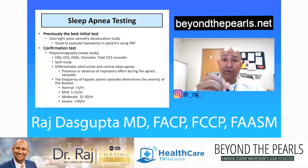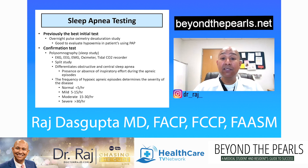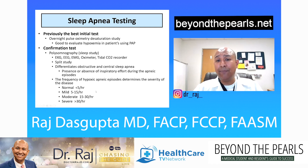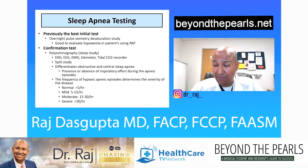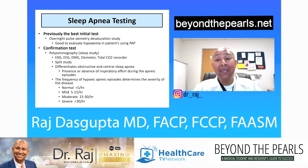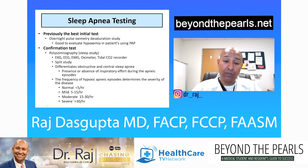In an in-lab study, I often do a split night — the first half to make the diagnosis, the second half to potentially treat with CPAP or BiPAP. Regarding severity, we use the apnea-hypopnea index: 0-5 is normal, 5-15 is mild, 15-30 is moderate, and greater than 30 is severe. I'm very aggressive about treating moderate and severe sleep apnea. For mild, treatment depends on comorbidities such as heart disease, congestive heart failure, coronary artery disease, or atrial fibrillation.